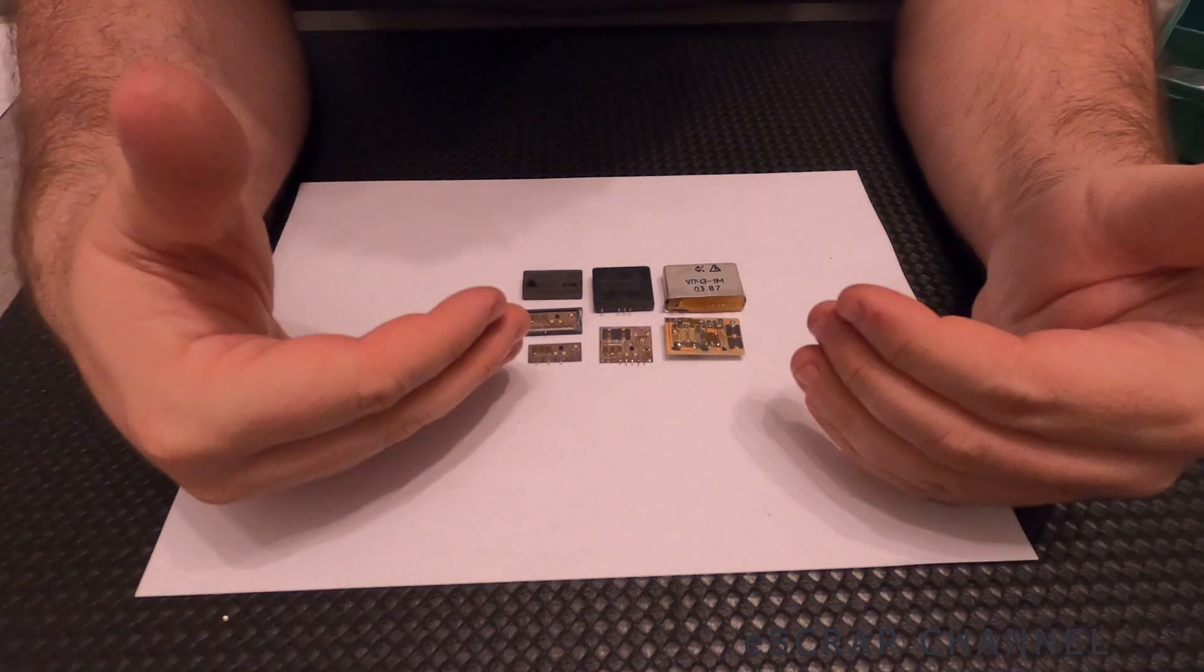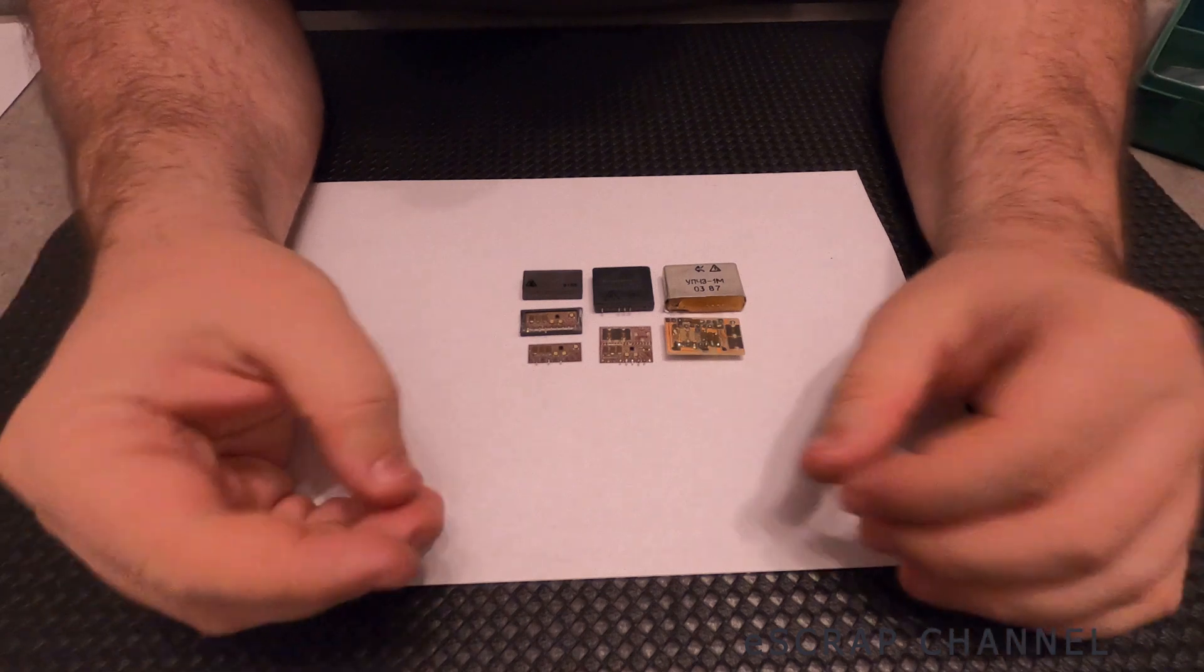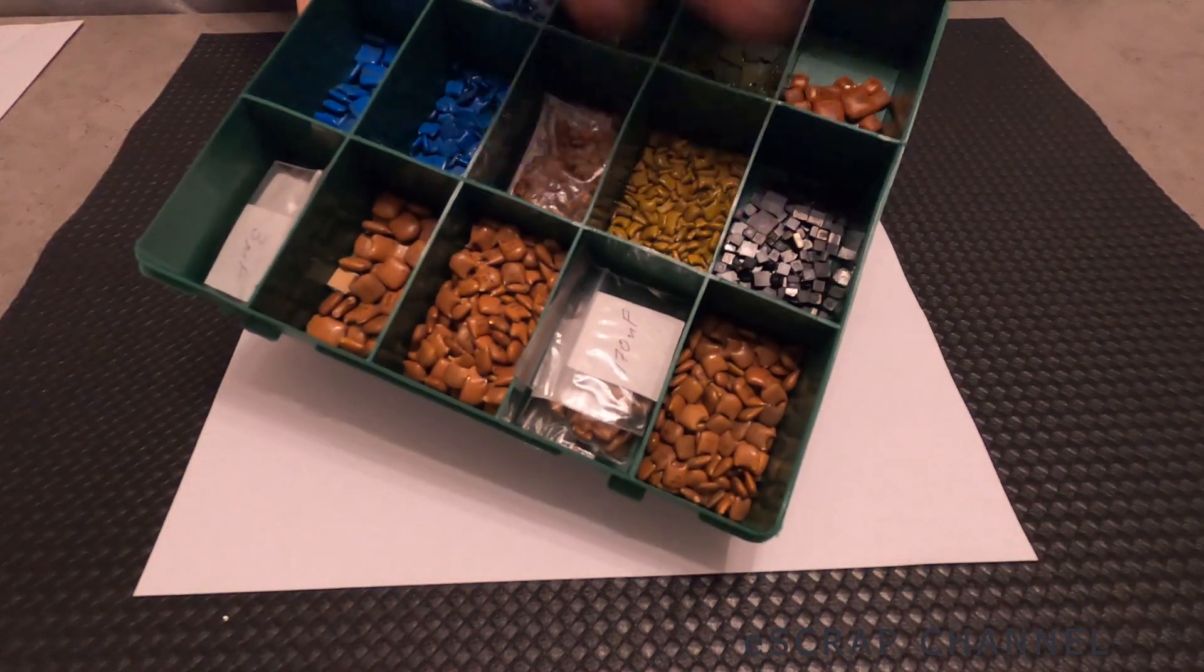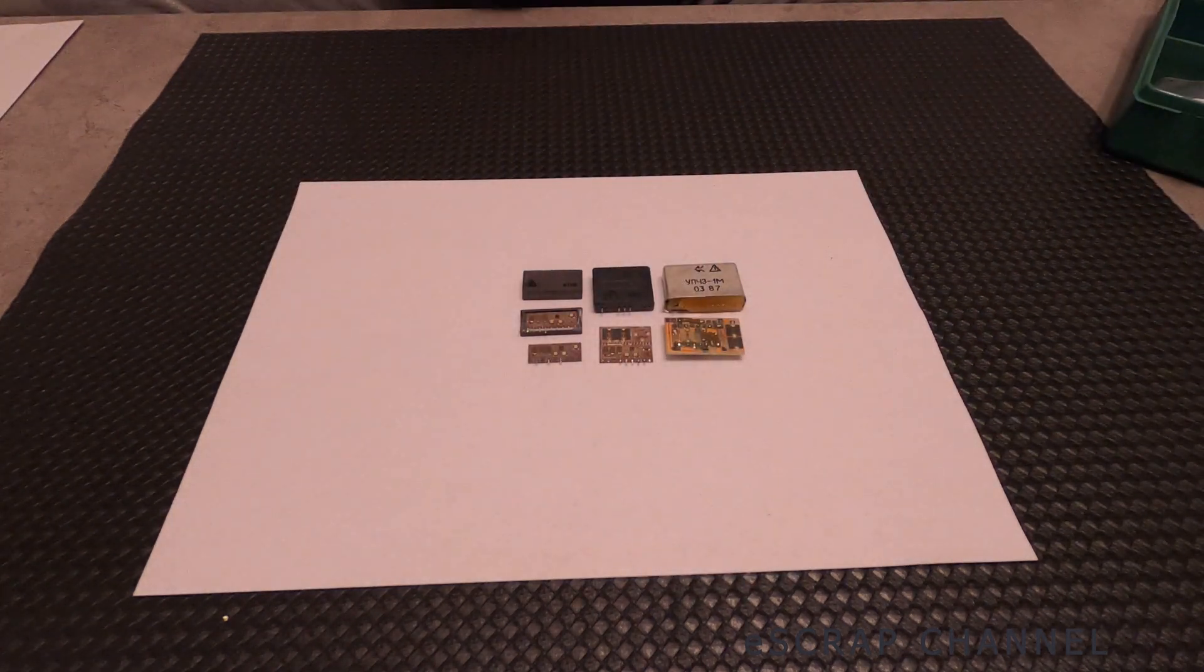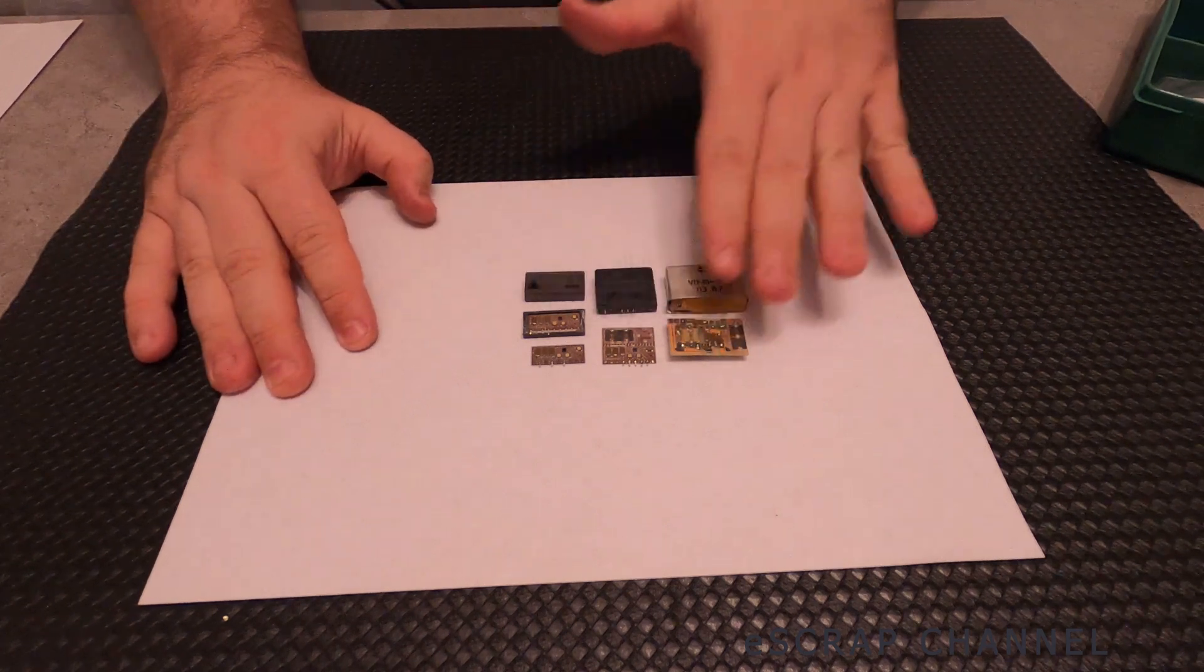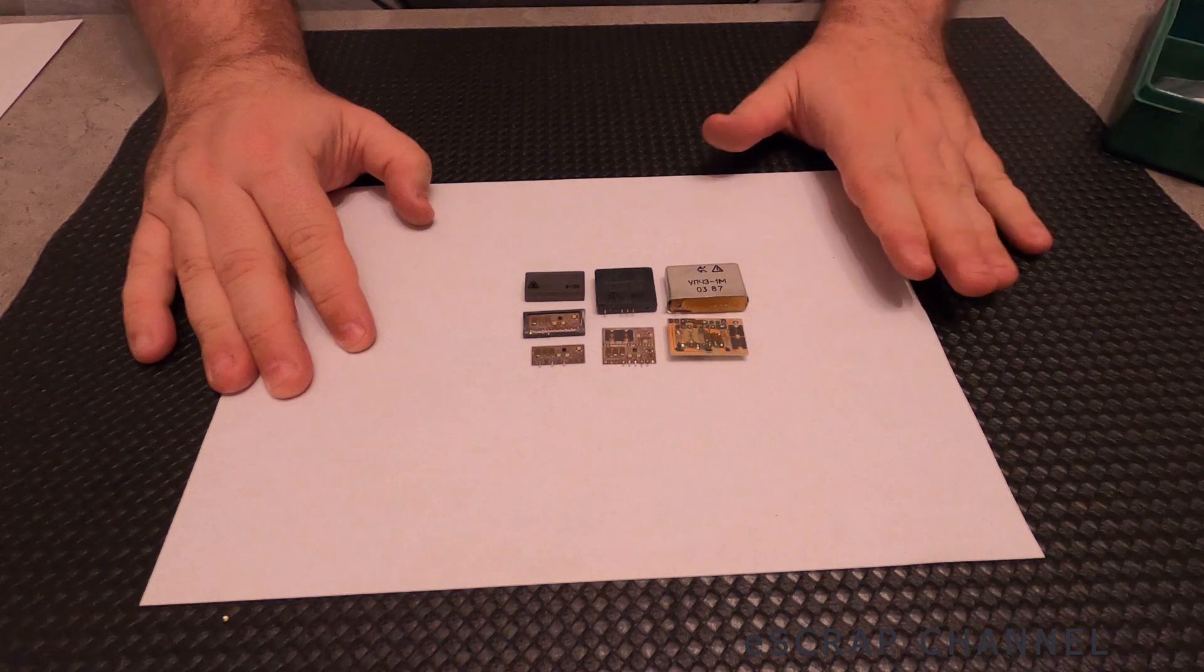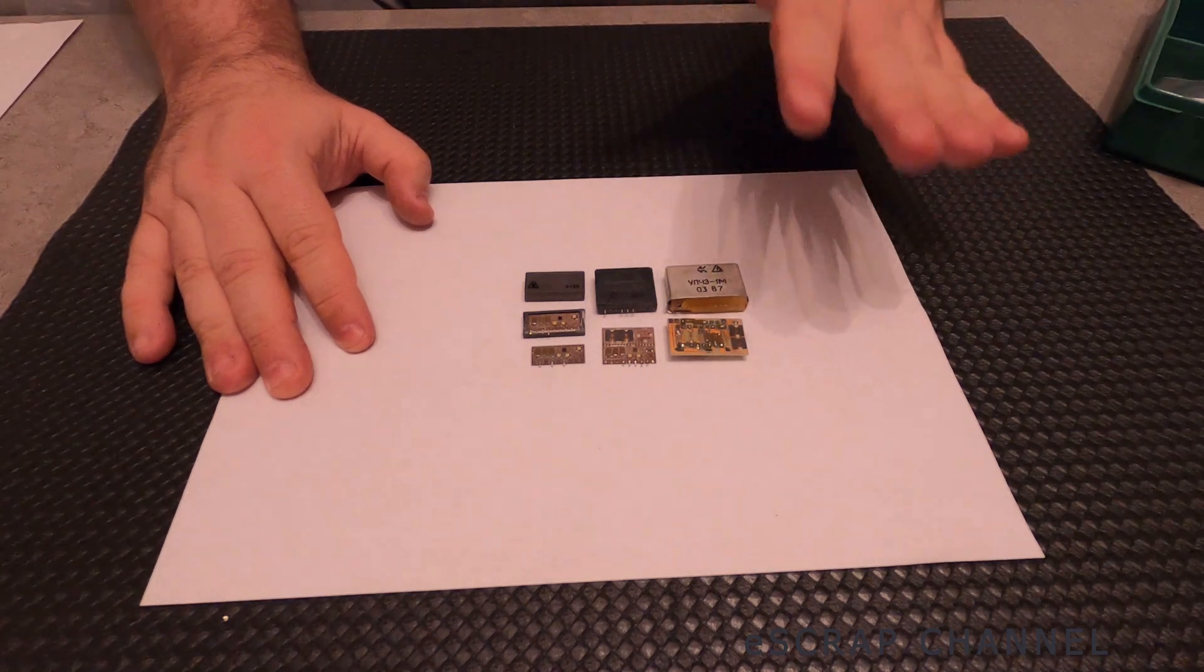So as you can see Soviet Union capacitors they are not only true hole mounted like what I present here and usually cut but you can also find them as surface mounted and the price of the surface mounted is not different than the price of the true hole mounted. We have same very high platinum group metals content.